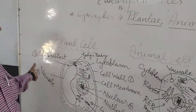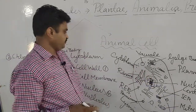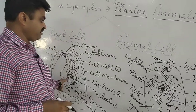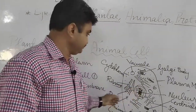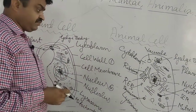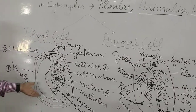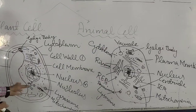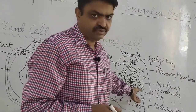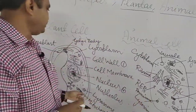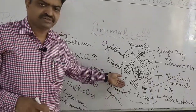The differences between plant cell and animal cell include: cell wall is present in plant cell but absent in animal cell, giving plant cell a rigid shape while animal cell has an irregular shape. Chloroplasts or plastids are present in plant cell but absent in animal cell. The vacuole is large in plant cell but small in animal cell. Centrioles are absent in plant cell but present in animal cell.